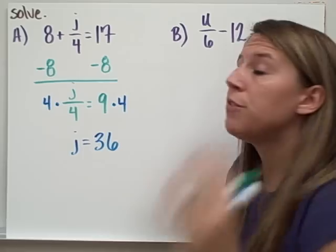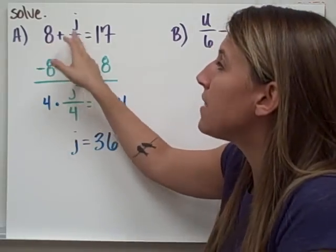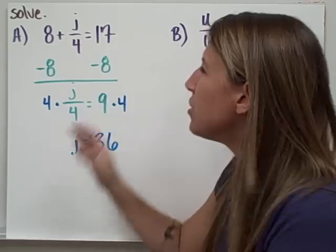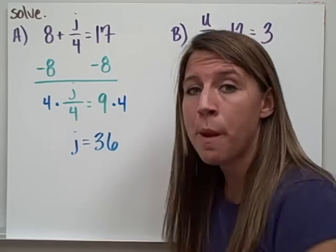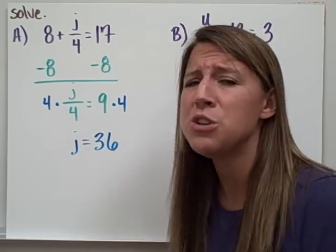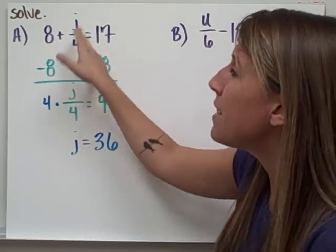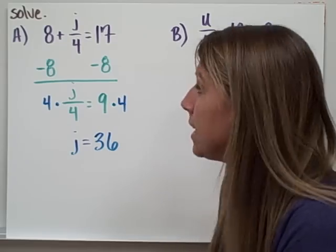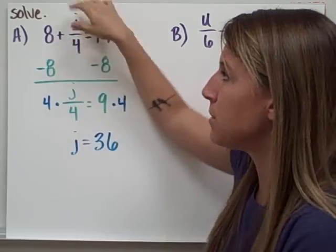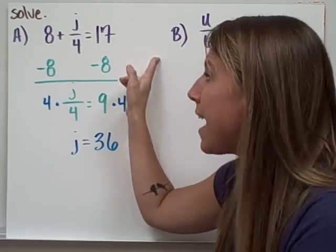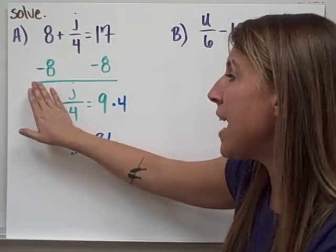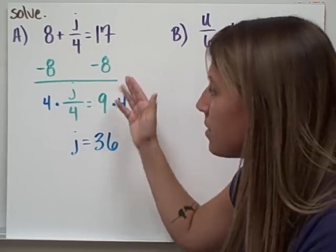So we're going to solve a few together. This is 8 plus j divided by 4. Don't get confused thinking this is some odd-looking fraction. It's simply just division represented within this 2-step equation, and you know how to handle that. 8 plus j divided by 4 equals 17. Well, I want to take away what's added or subtracted to this first, and that is 8. So I'm going to subtract 8 from both sides. That gives me j divided by 4, equals 9.